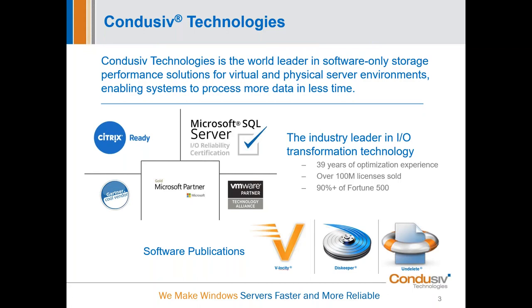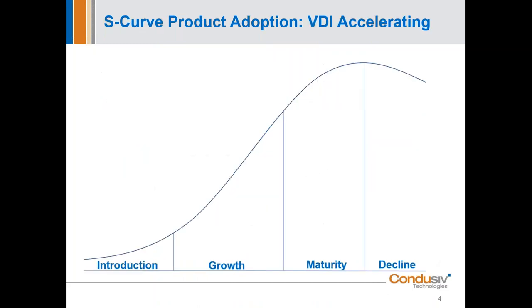We're going to jump into setting the table of what's happening today with the VDI space. We're all familiar with the S-curve of product adoption. When something hits about 90% market saturation, it's considered to be at full maturity. A lot of products never make it there. We've got products that have gone obsolete — the Model T Ford covers it.